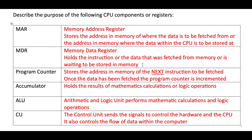A useful metaphor: the Memory Address Register is like the address on the front of an envelope, and the Memory Data Register is the data within the envelope. The address on the front tells us where the data is flowing, while the contents of the envelope is the data itself.